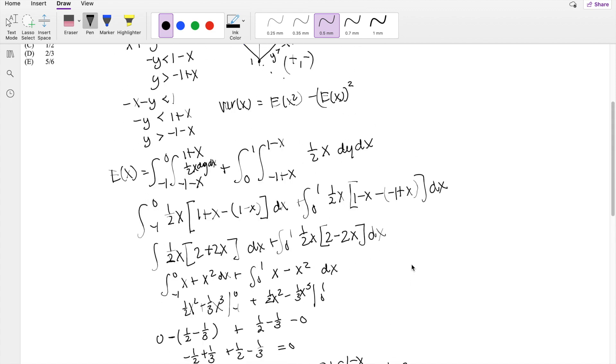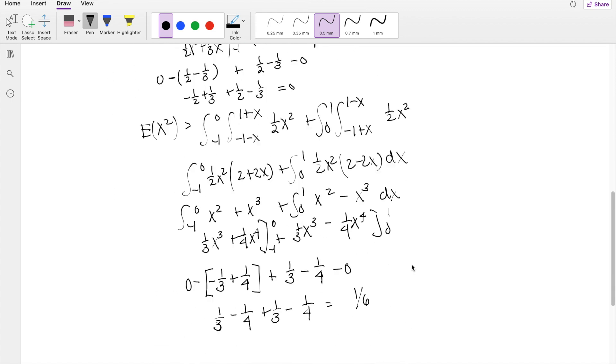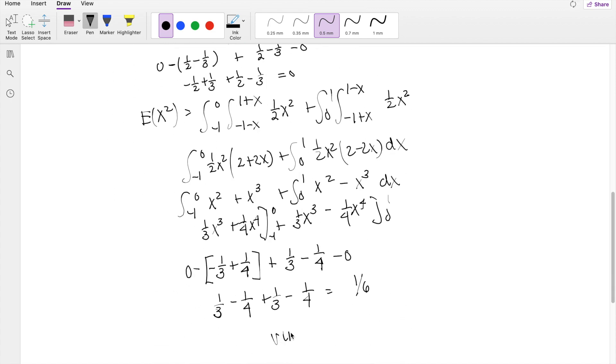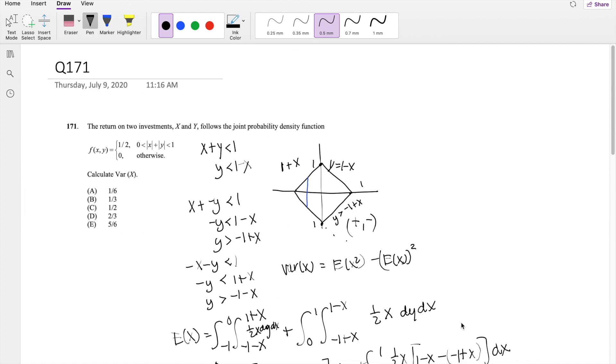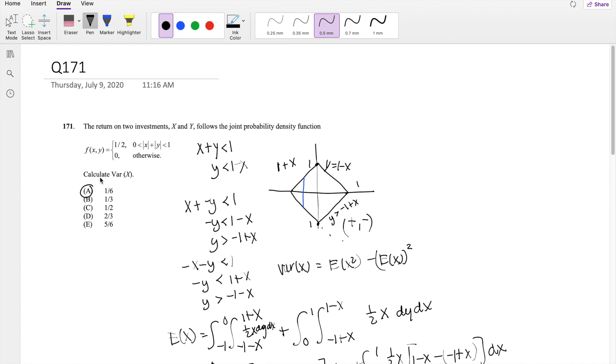Beautiful. And we just have to put it back into our variance formula. Variance of x is equal to second moment minus the expectation squared. So that's 1 sixth minus 0, which is 1 sixth. Our answer, A. If you guys have any questions, feel free to leave them down below. Otherwise, as always, make sure you like, subscribe, and share. Bye!